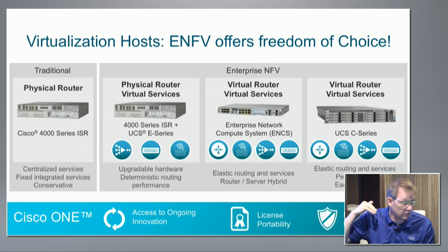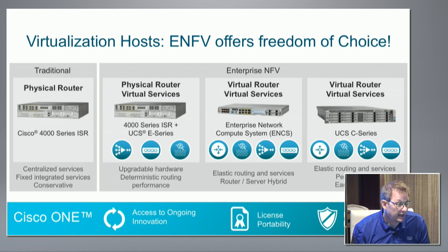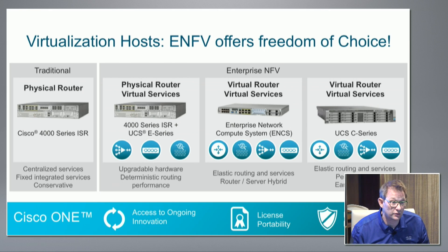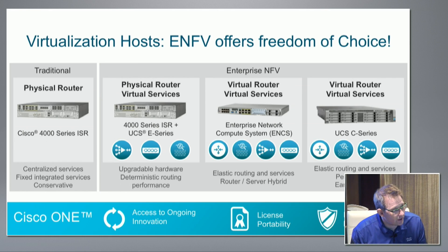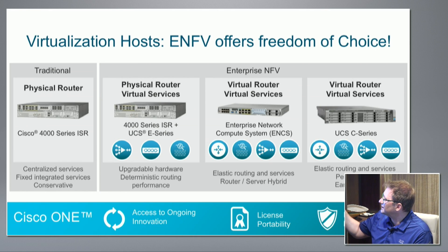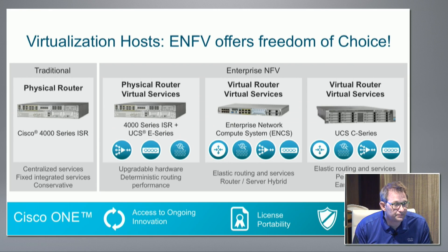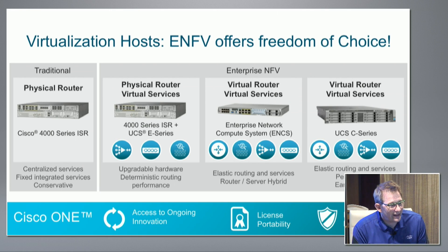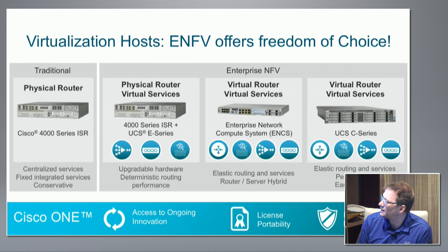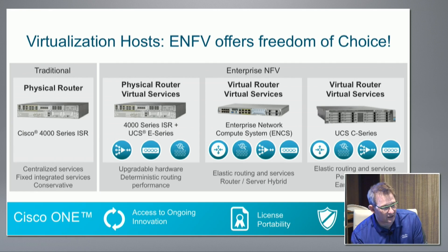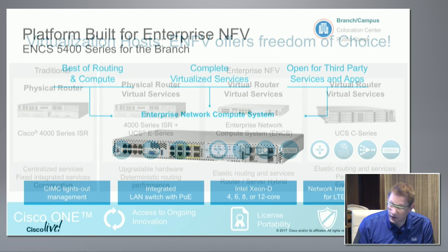We have customers who are quite advanced and aggressive about their journey toward virtualization — sometimes they already have data-center-grade servers in branches with lots of cores to spare, running application hosting, point of sale, and other apps. For those environments, we support the full data-center-grade UCSC series as a virtualization option. The third platform shown here is the Enterprise Network Compute System, ENCS, and that's what we've really innovated as part of ENFV — a system designed for branch environmental conditions and form factors, but truly an x86 compute system.